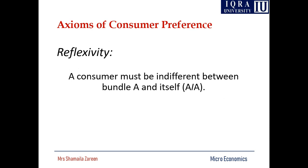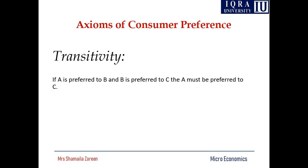The second axiom is reflexivity: both bundles are a reflection of one another — the consumer must be indifferent between bundle A and itself. Both bundles give him the same level of satisfaction; A has a mirror impact on the other bundle, showing the reflection of each other. The third is transitivity, which is a very important axiom of consumer preferences — the indifference curve must follow all these axioms.